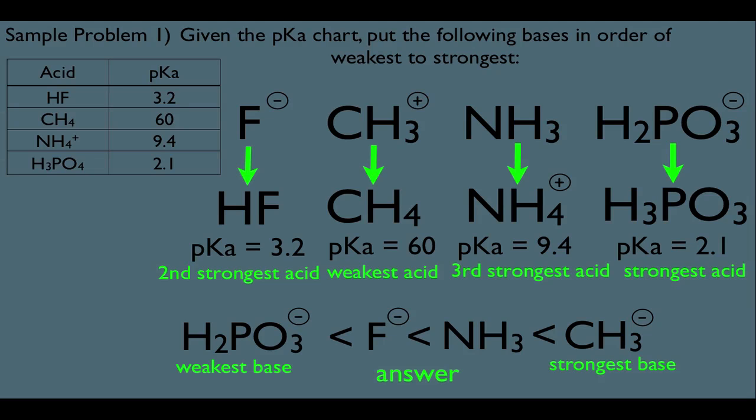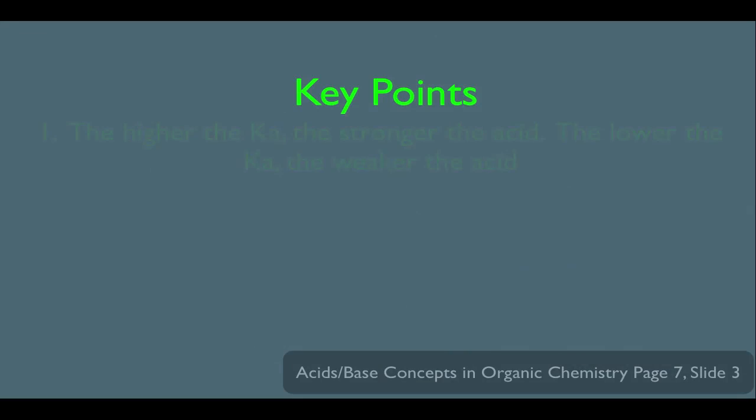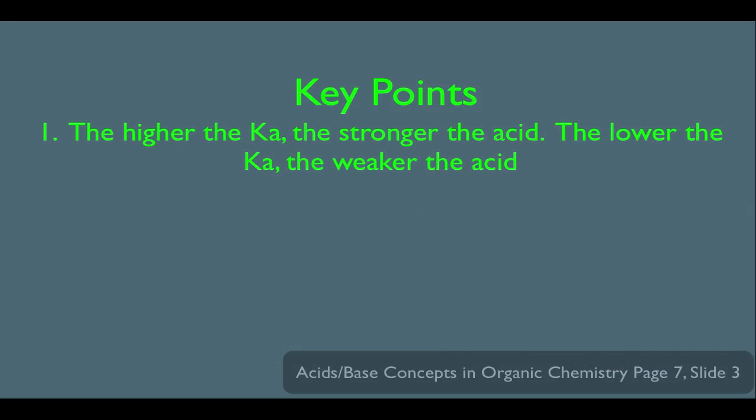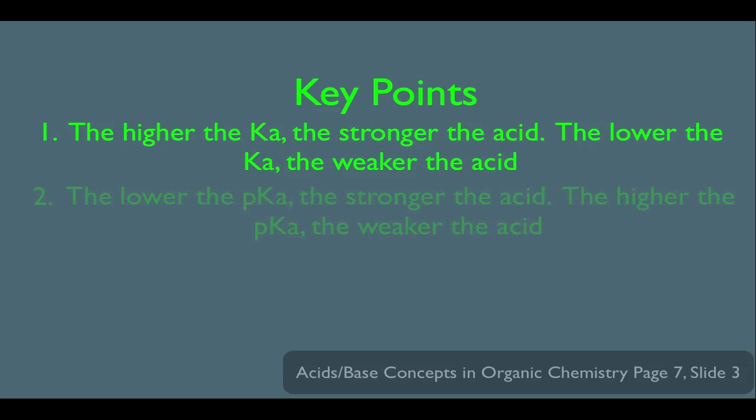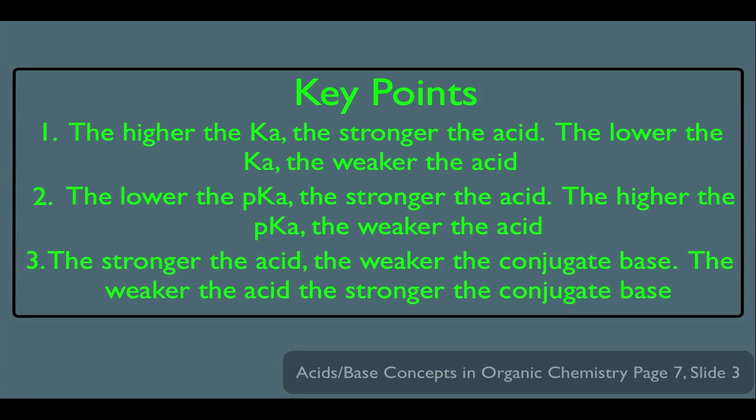So, what have we learned here? Key points. Number one, we saw the higher the Ka, the stronger the acid. The lower the Ka, the weaker the acid. We also saw two, the lower the pKa, the stronger the acid. The higher the pKa, the weaker the acid. And we saw three, the stronger the acid, the weaker its conjugate base. And the weaker the acid, the stronger its conjugate base.